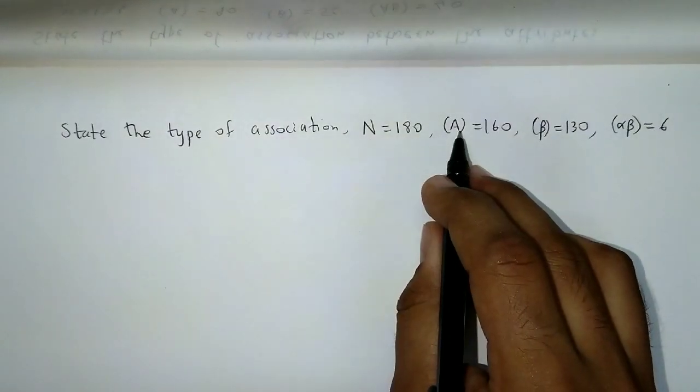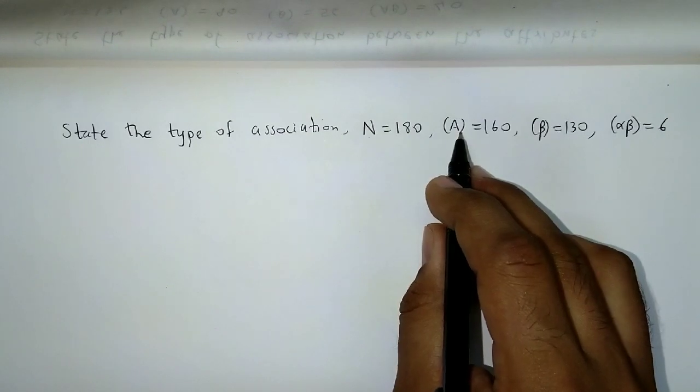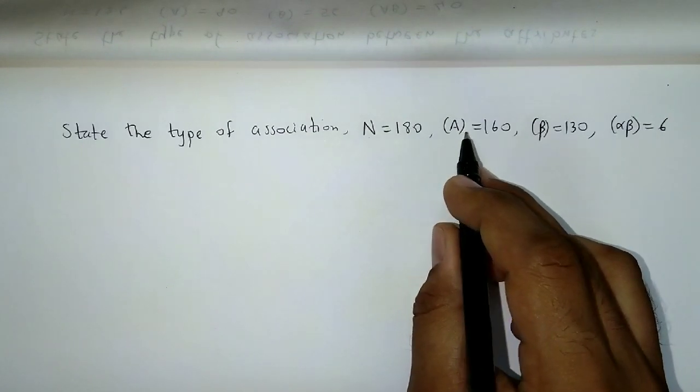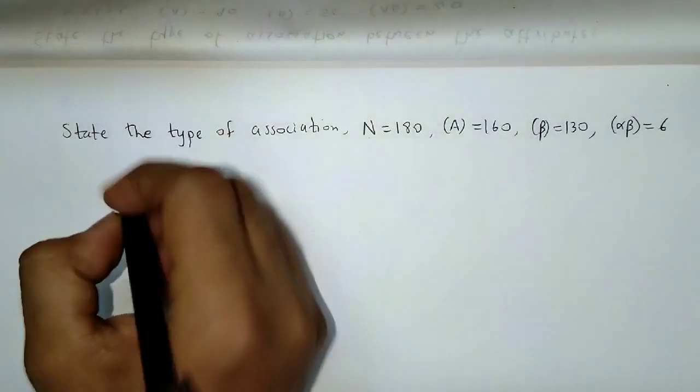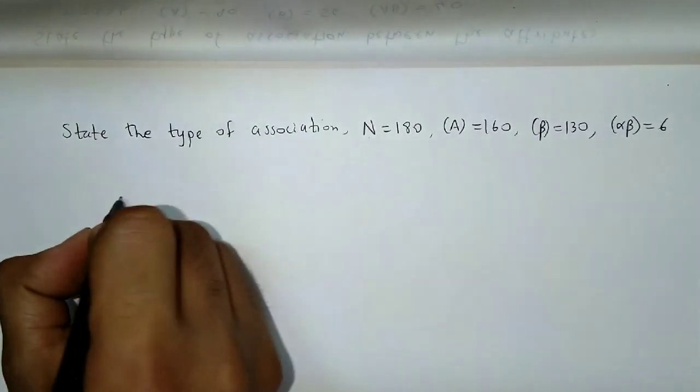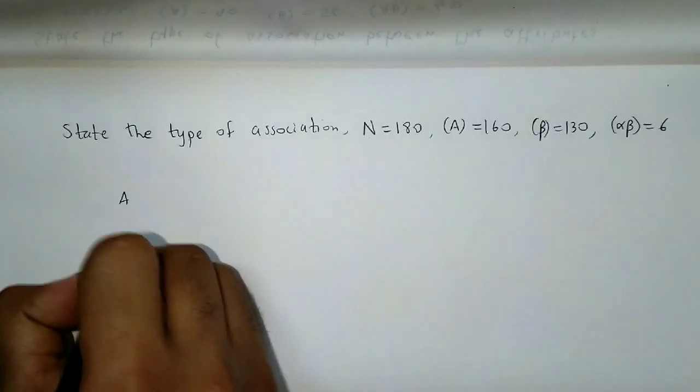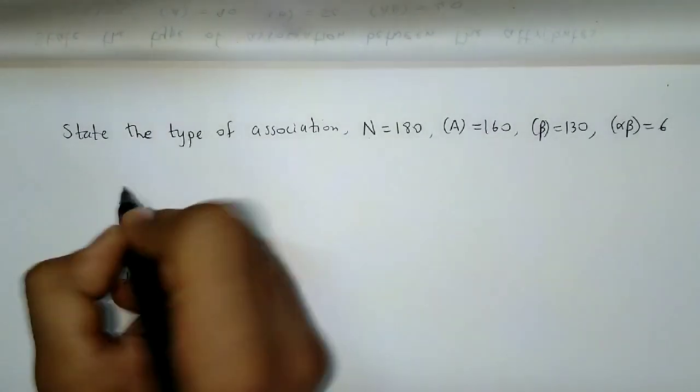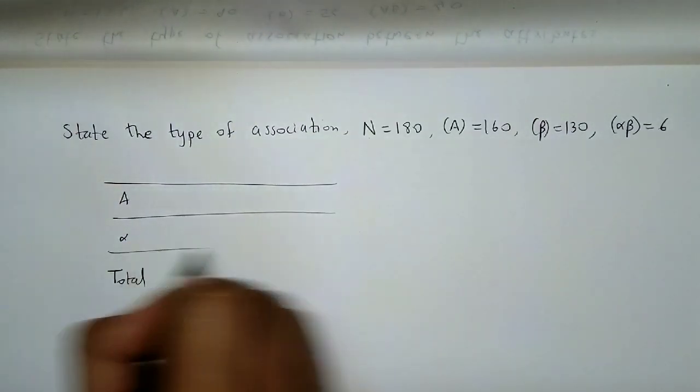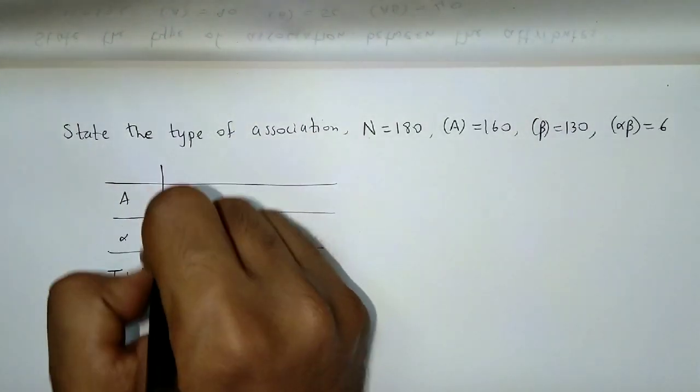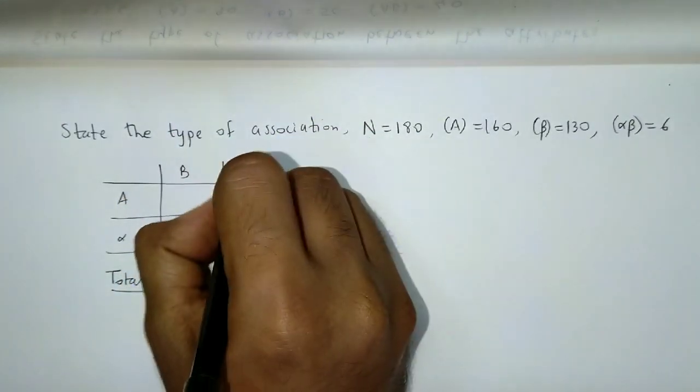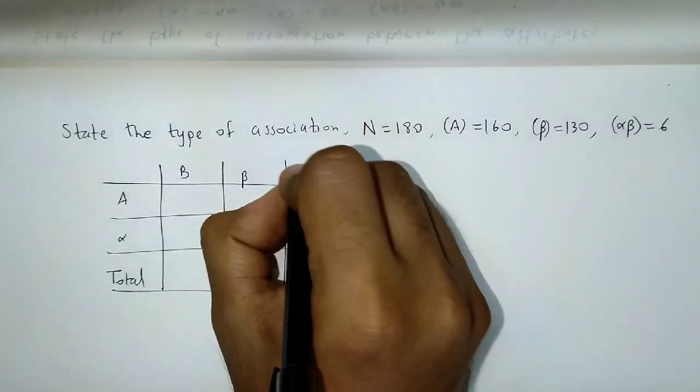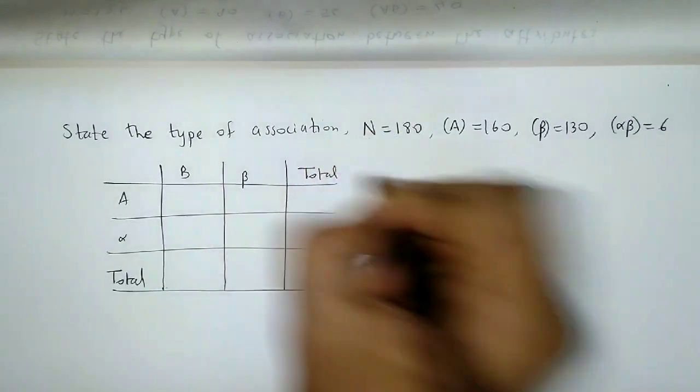So, N is given, but here B is not given, and alpha is not given. Now, that could be easily obtained with a nine square table. So, let's start with the nine square table. First, we prepare the nine square table. So here, A, alpha, total. Then, this column would be B. Then beta. And total.